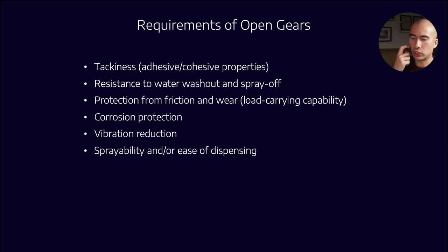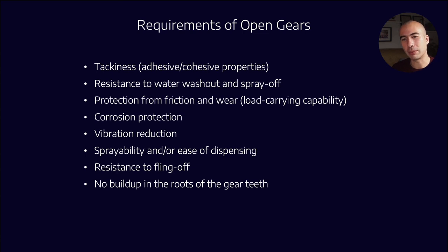We ideally want a system, and we'll get into this later, that is sprayable. So a lot of the different systems which are used to apply open gear lubricants to the teeth are spray systems. So we want something that's easy to dispense in an automated way. We want resistance to fling off, so that's related to the tackiness. And what we don't want is a buildup in the root of the gear tooth. So I talked about that briefly in the first module, where we talked about the fact that you can get buildup of degradation products, and that can actually affect the alignment of the pinion and the girth gear. And finally, in an ideal world, we want it to be drainable so that we can easily remove it from guards.